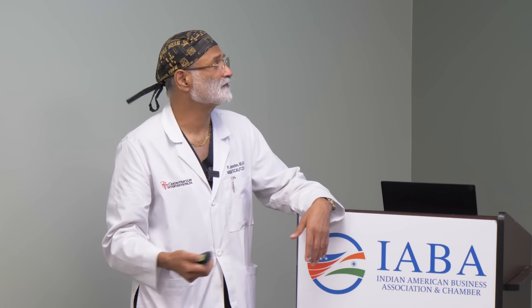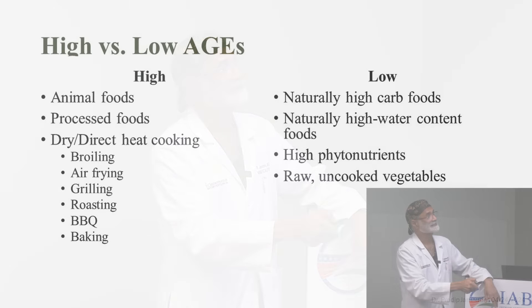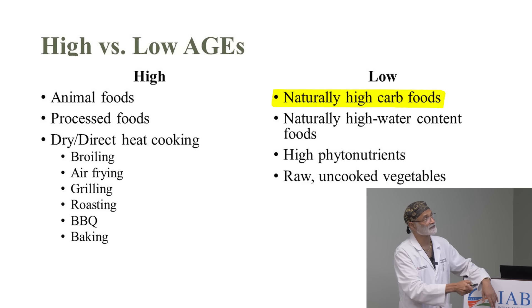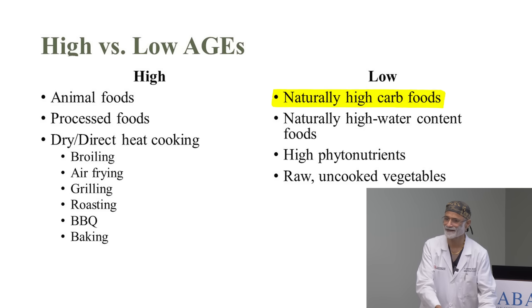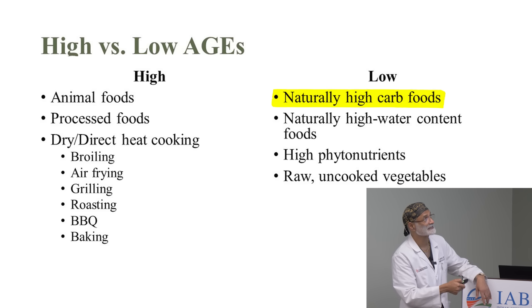What's naturally low in AGEs? Naturally high-carb foods like tubers and potatoes are very low in advanced glycation end products. So if you're not diabetic, you can have carbs. Naturally high-water content foods are important too — when you have water with sugar, protein, and oil, you get less advanced glycation end products. So you want to stew your meat, chicken, or vegetables. What's the maximum temperature of water? 100 degrees centigrade — you can't go higher. So our traditional ways of making curry and stewing were the right way.